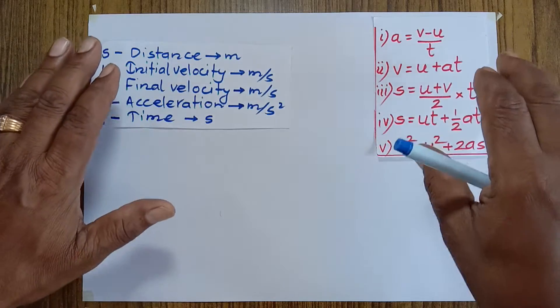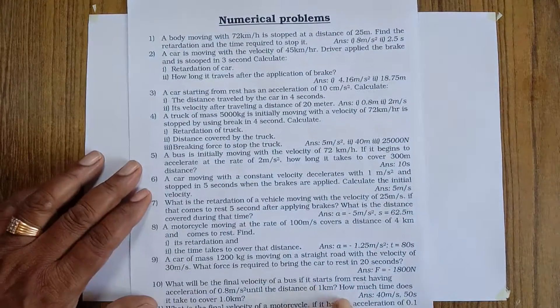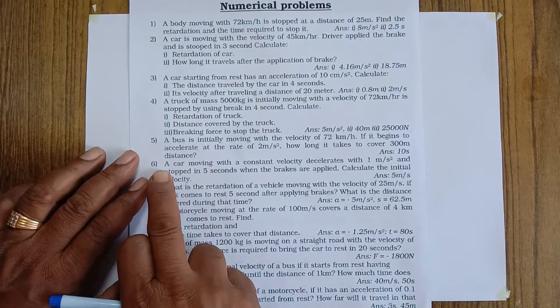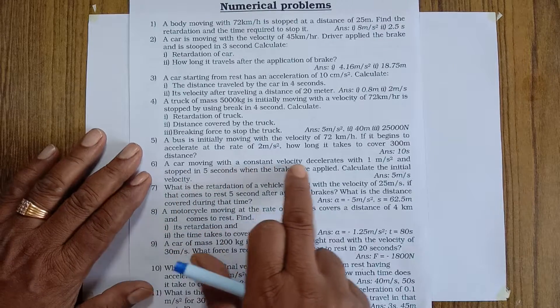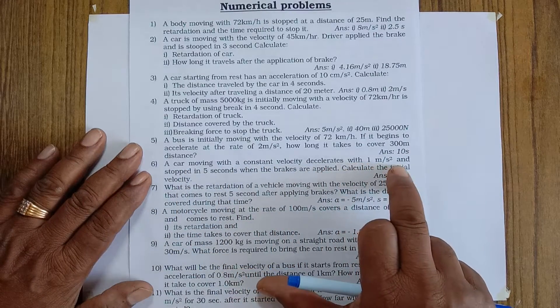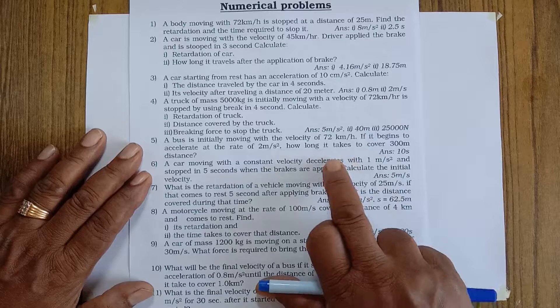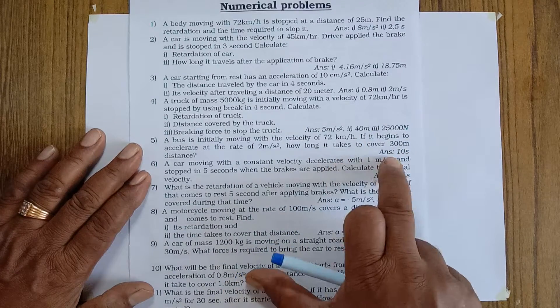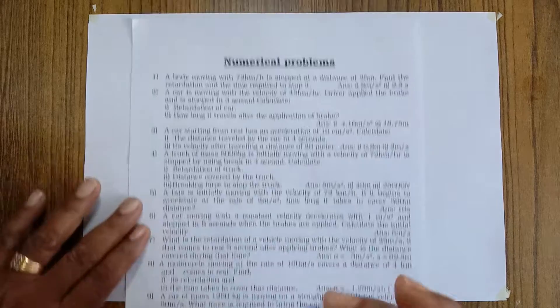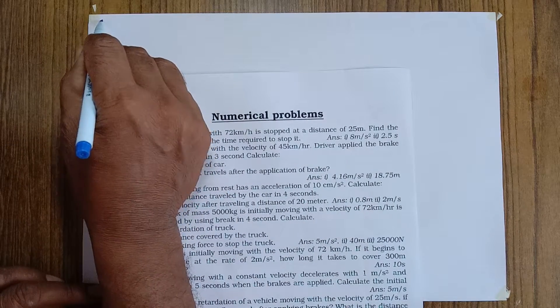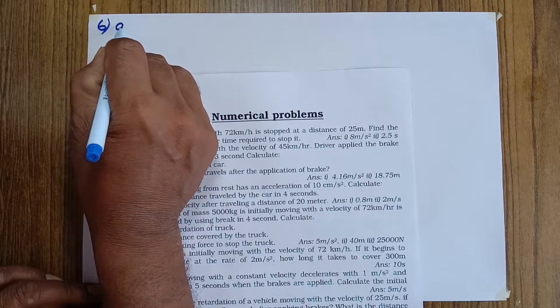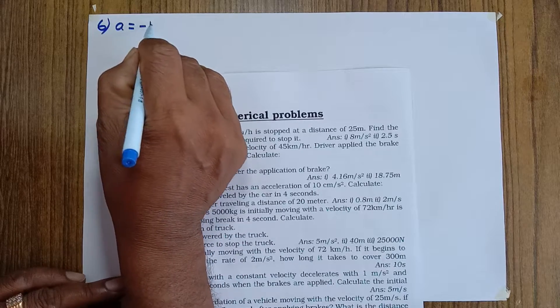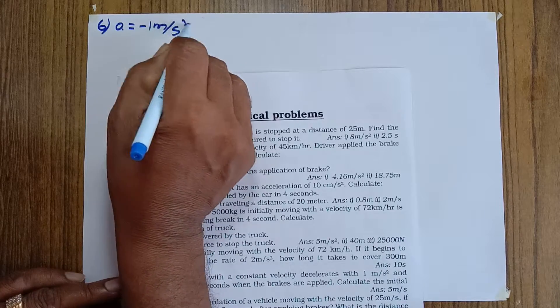Now let's start with numerical problems. We have done up to question five in the previous class. Question number six: a car moving with a constant velocity decelerates at one meter per second squared. Deceleration means velocity decreases every second, so acceleration is negative — a equals minus one meter per second squared.